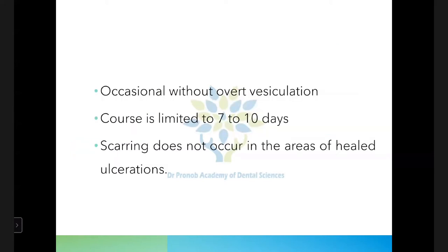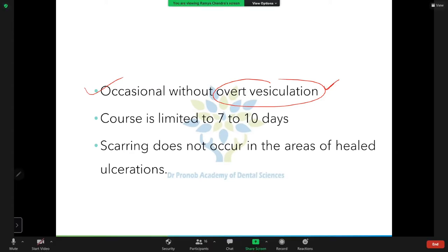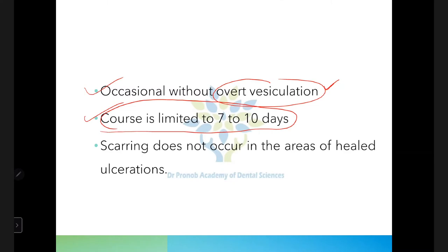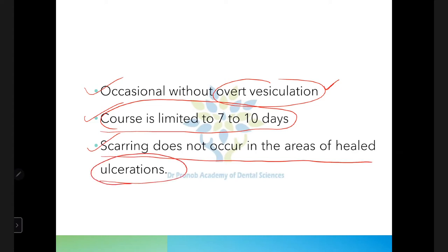Occasionally the condition is seen without overt vesiculation — vesicles may not always be visible. The course is limited to seven to ten days. Scarring does not occur in areas of healed ulceration — once the ulcers heal, no scarring is seen in primary herpetic gingivostomatitis, which is an important feature.